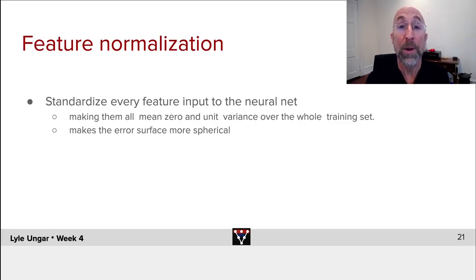It's standard practice when training deep learning to standardize all of the features input to the neural network. Take each feature, subtract off its mean over all the observations, divide by its standard deviation over all the observations. So each of the features, each of the inputs to the neural network, has mean zero and variance one.